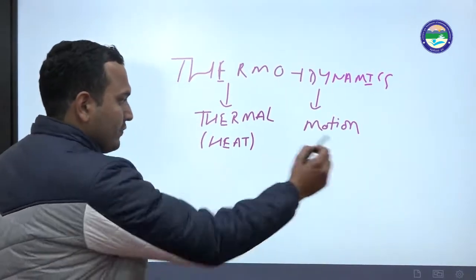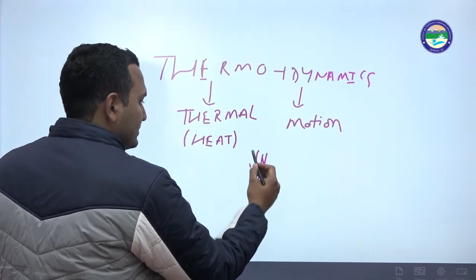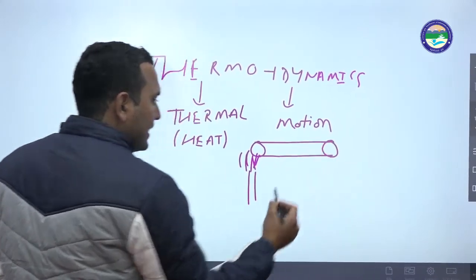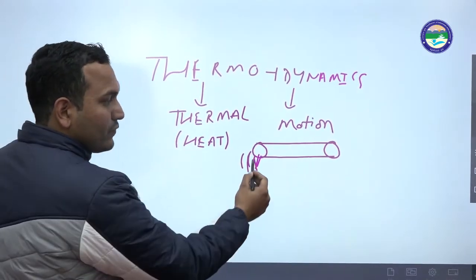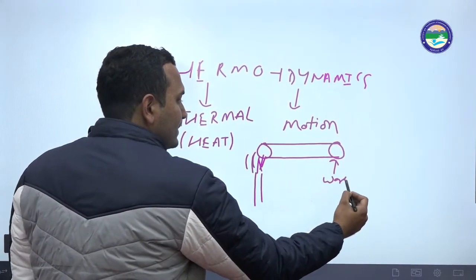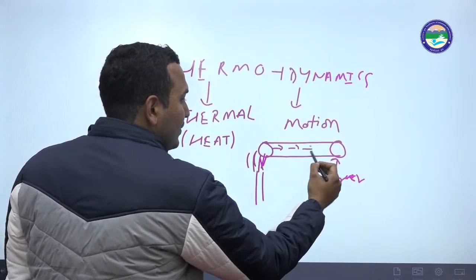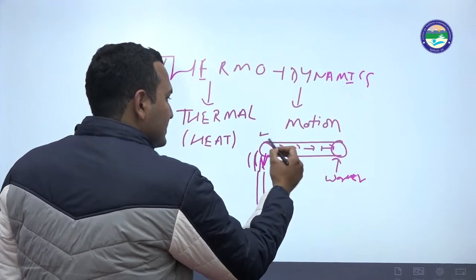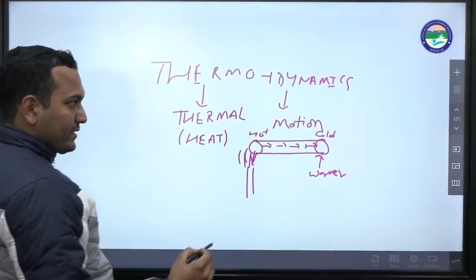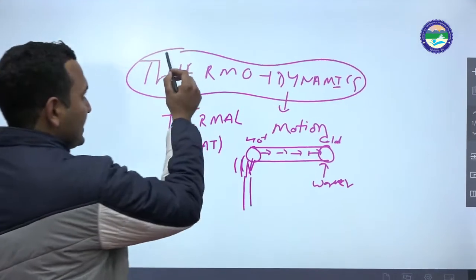Suppose we have a system: we have fire here and a rod. If we give heat to one end, you will see the second end will be warmer after some time. This means the heat has flowed from the hot end to the cold end. This flow of heat is called thermodynamics.